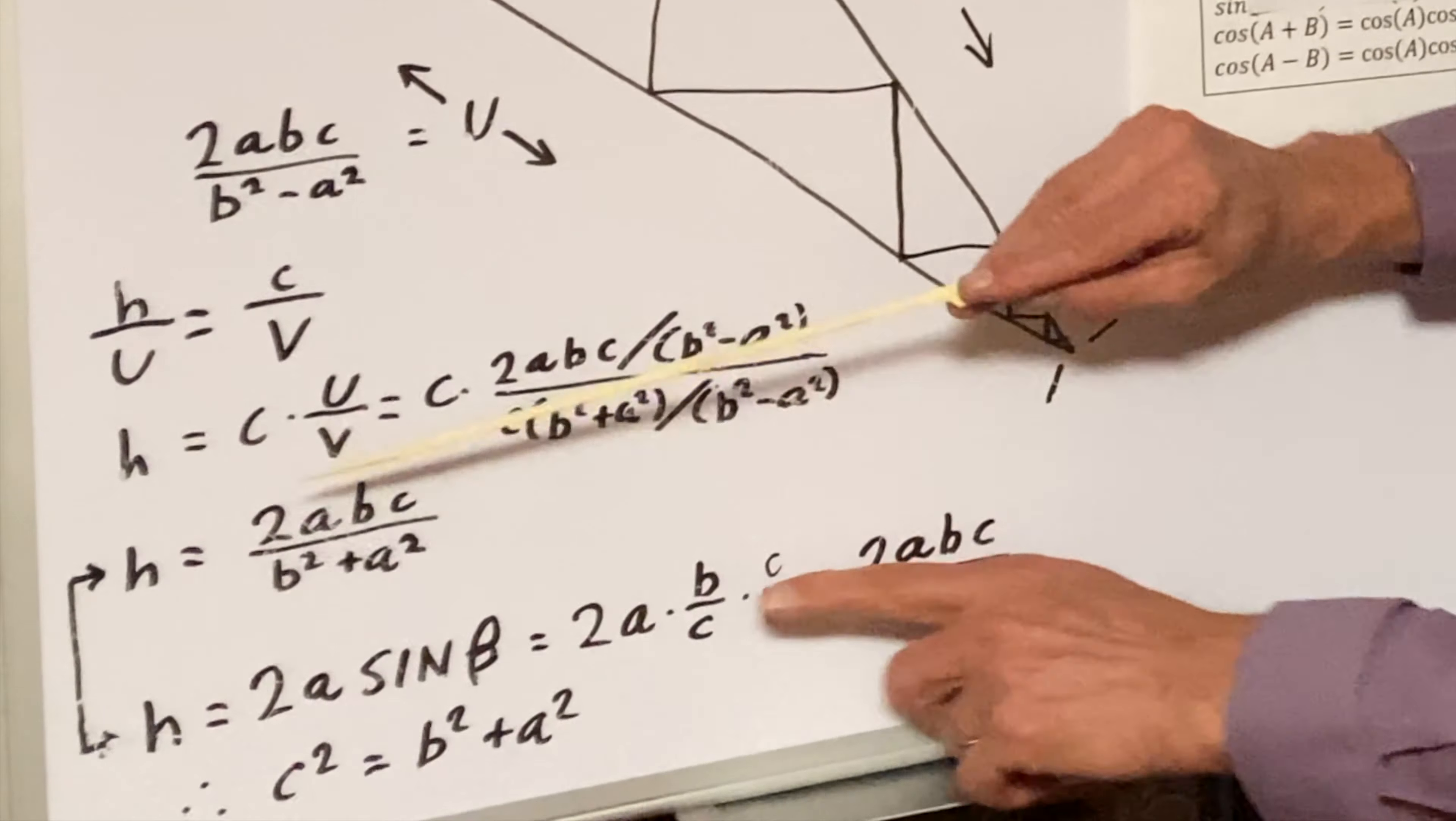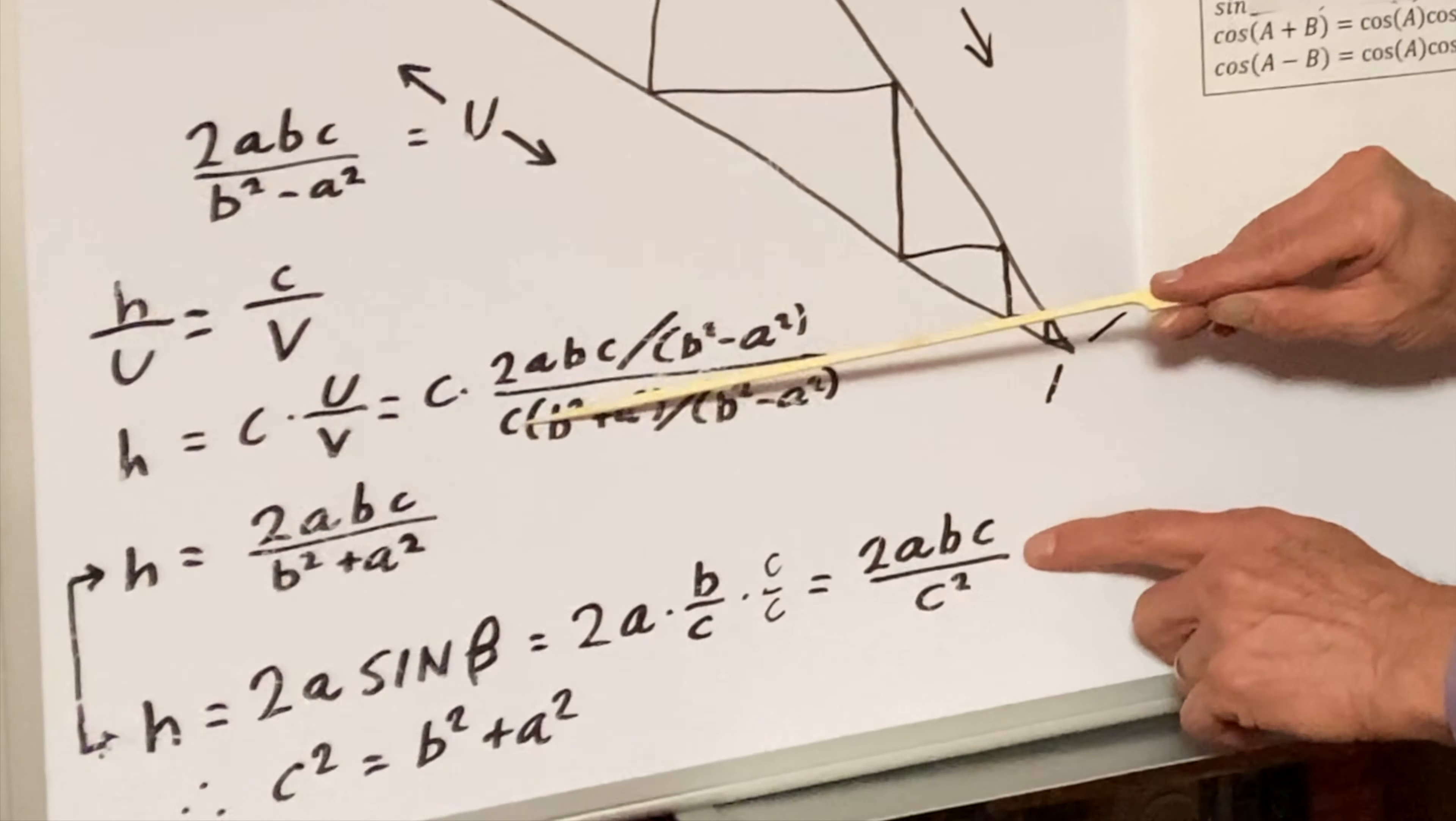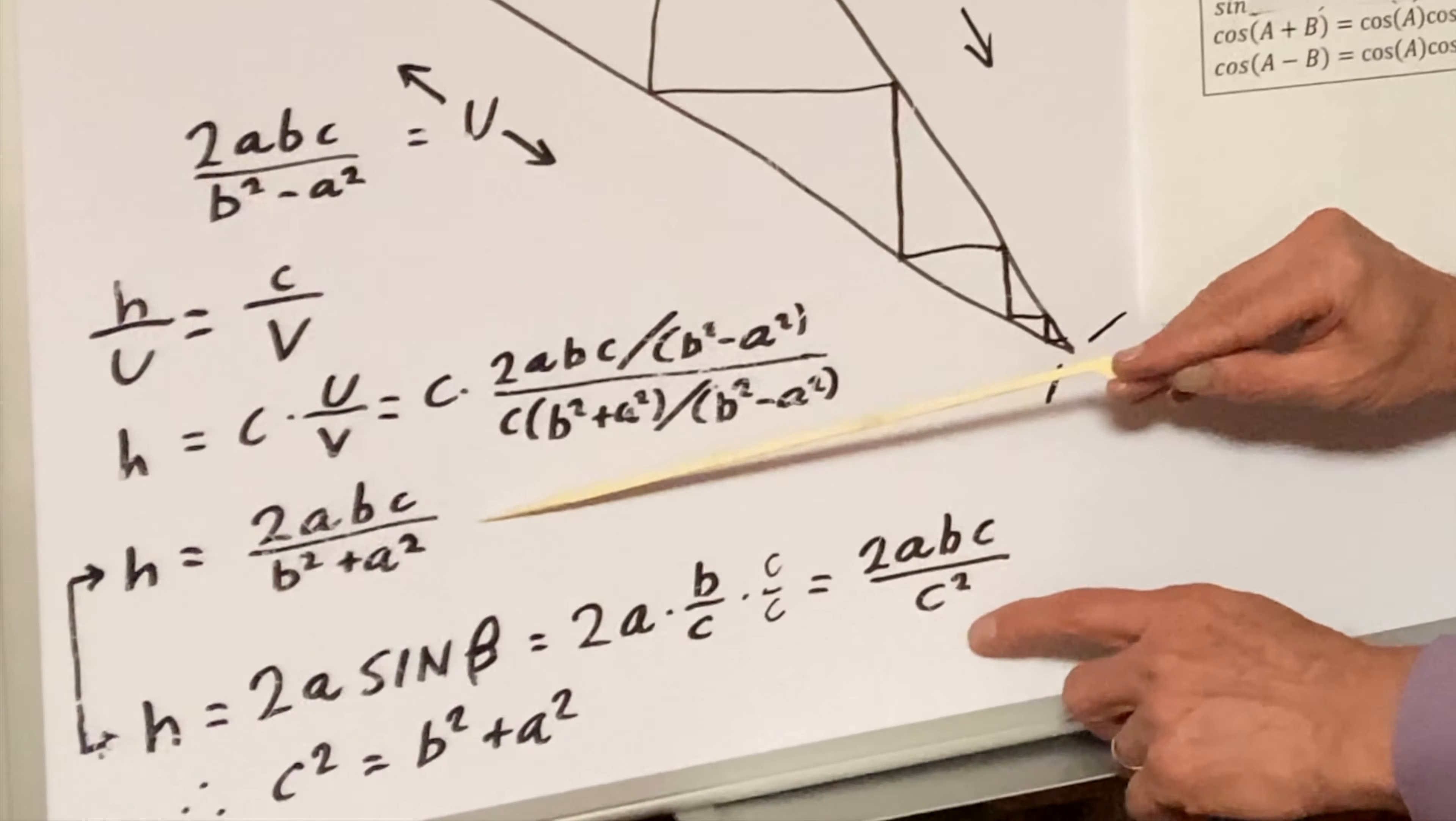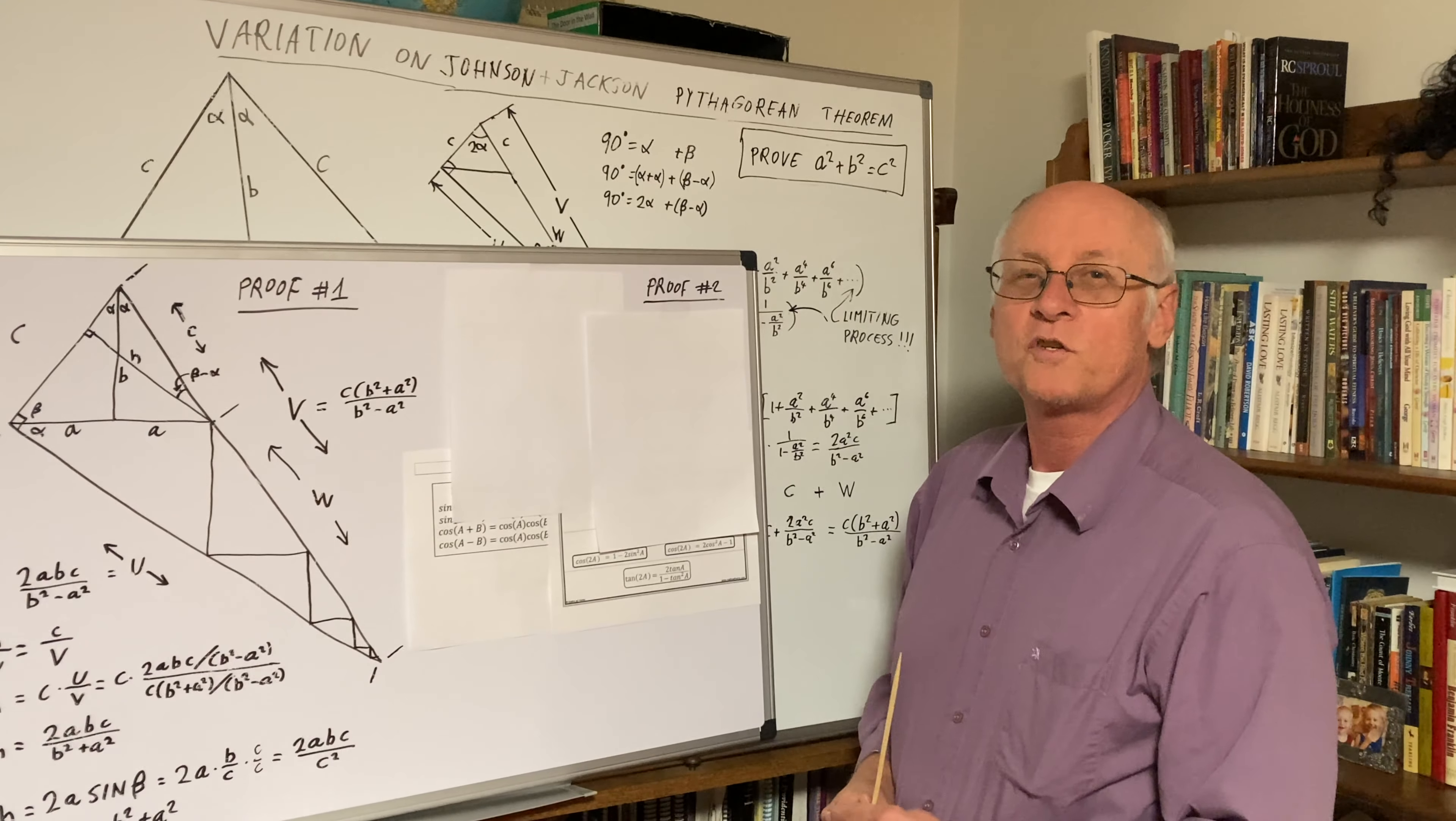Notice these two entities, they're the same. The numerators are the same. Therefore, the denominators must be the same. Therefore, C squared equals B squared plus A squared. Proof number two.